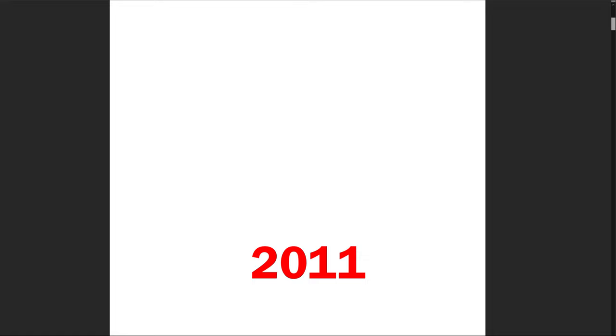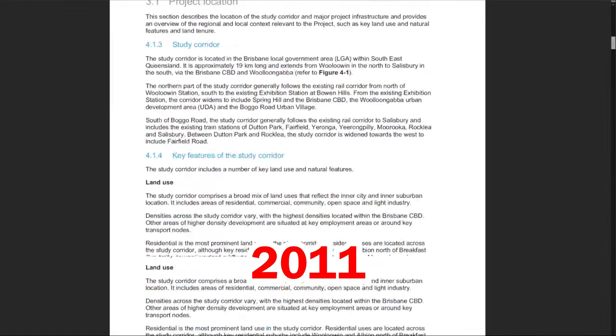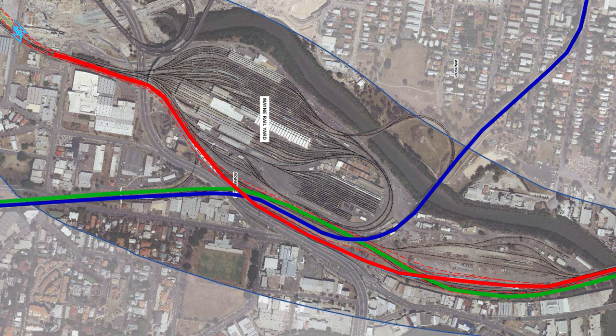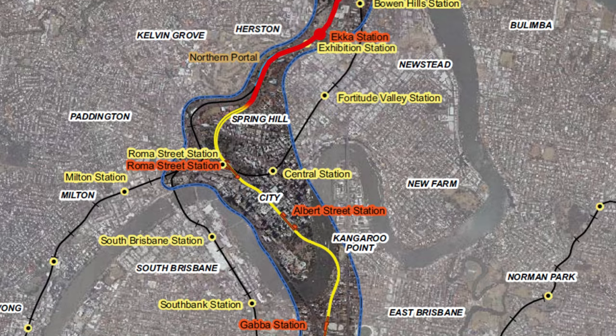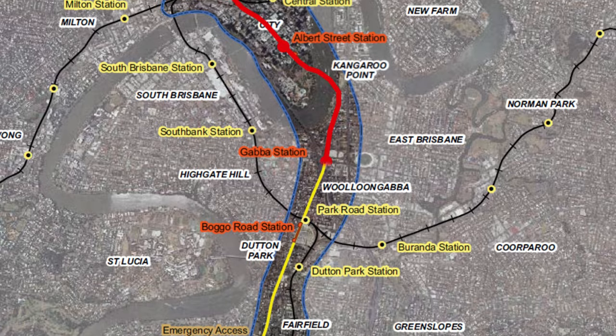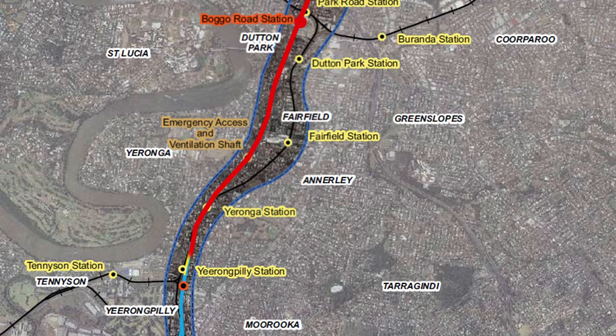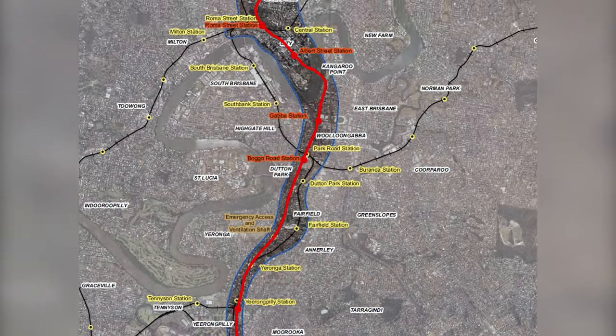Cross River Rail first came about in its earliest form in the 2011 proposal by the state government. In the original design, all Mains sector trains coming from the north would travel through main yards on a great big bridge and go into the tunnel just after Exhibition Station. Then they would go through the city, through the Gabba, with an underground station below Park Road, and continue without stopping all the way to Yeerongpilly, where they would come up continuing on towards Beenleigh and the Gold Coast. And it was that last section which caused the first big problem — a whole row of houses would have been destroyed to make way for an upgraded station, and the locals were not happy.